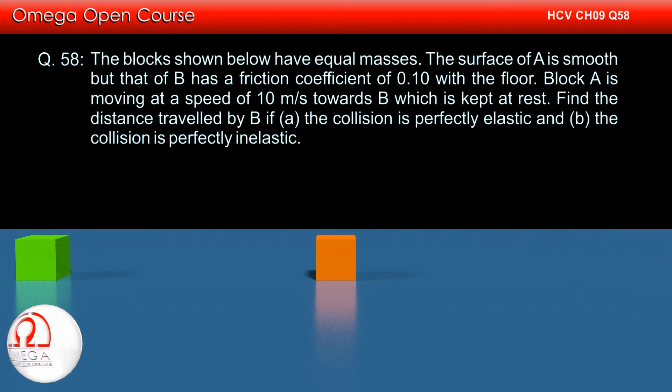The blocks shown below have equal masses. The surface of the green block is smooth but that of the orange block has a friction coefficient of 0.1 with the floor. The green block is moving at a speed of 10 meters per second towards the orange block which is kept at rest.